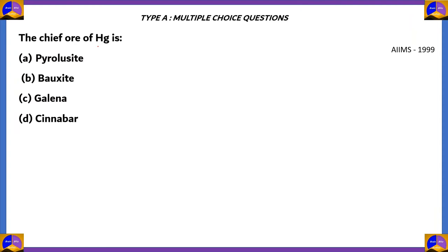Next question. The chief ore of mercury is: A, pyrolusite; B, bauxite; C, galena; D, cinnabar. Let's look at the chemical formulae of each of our given ores. Option A, pyrolusite is MnO2, which means it's an ore of manganese. So option A is incorrect.